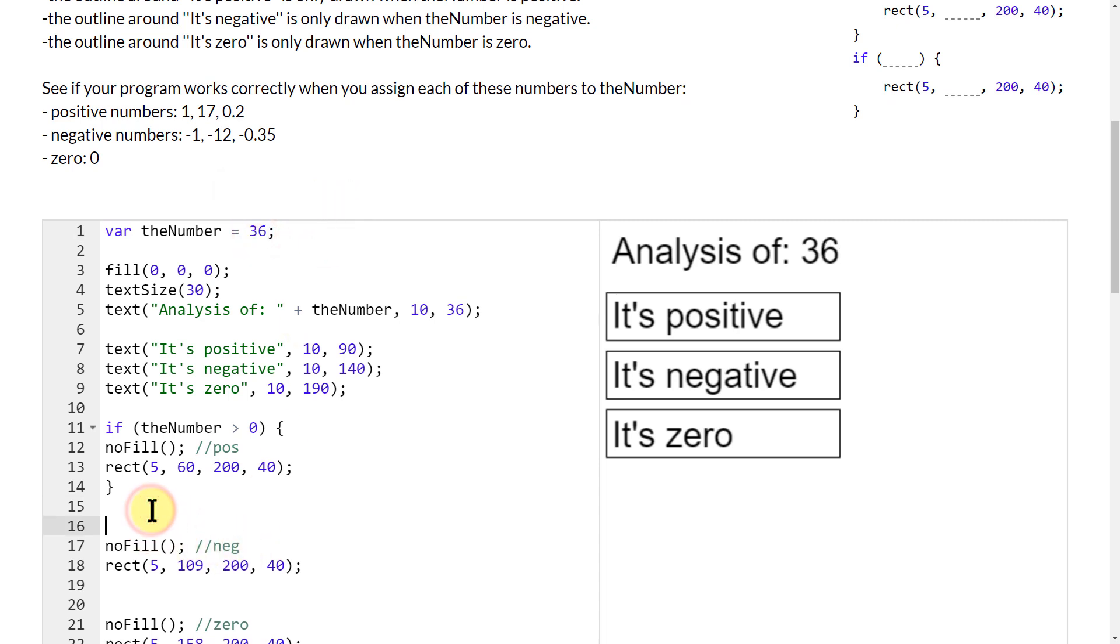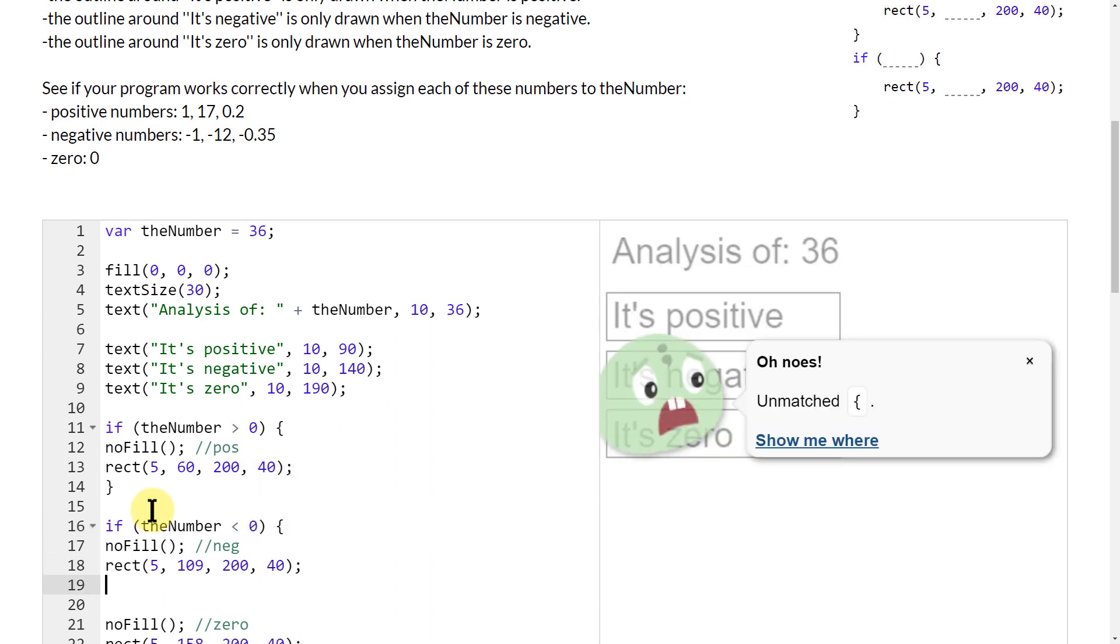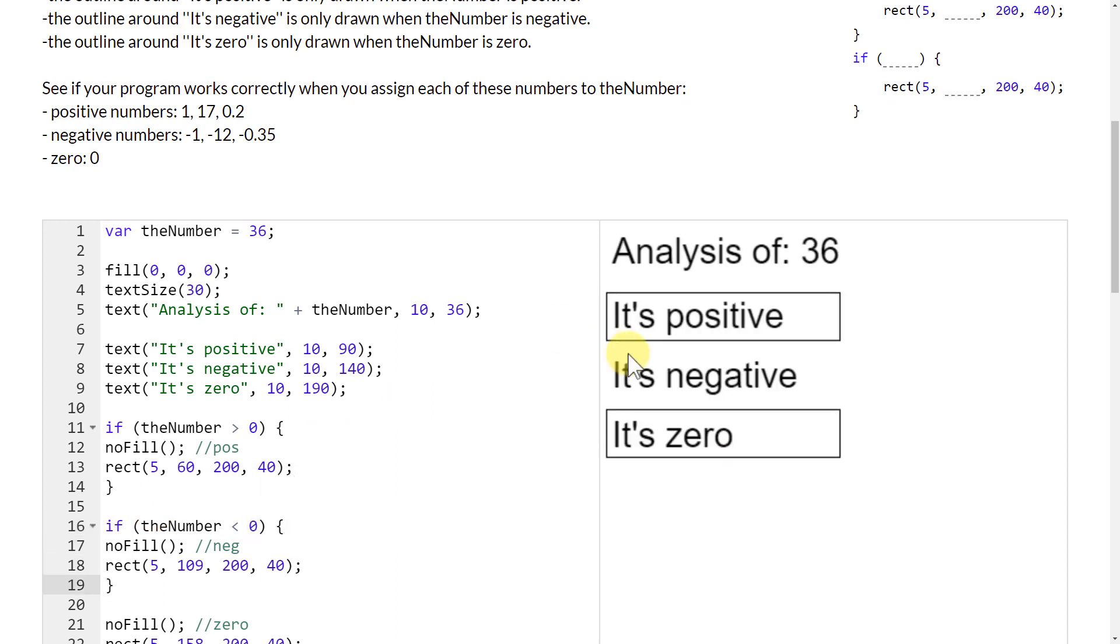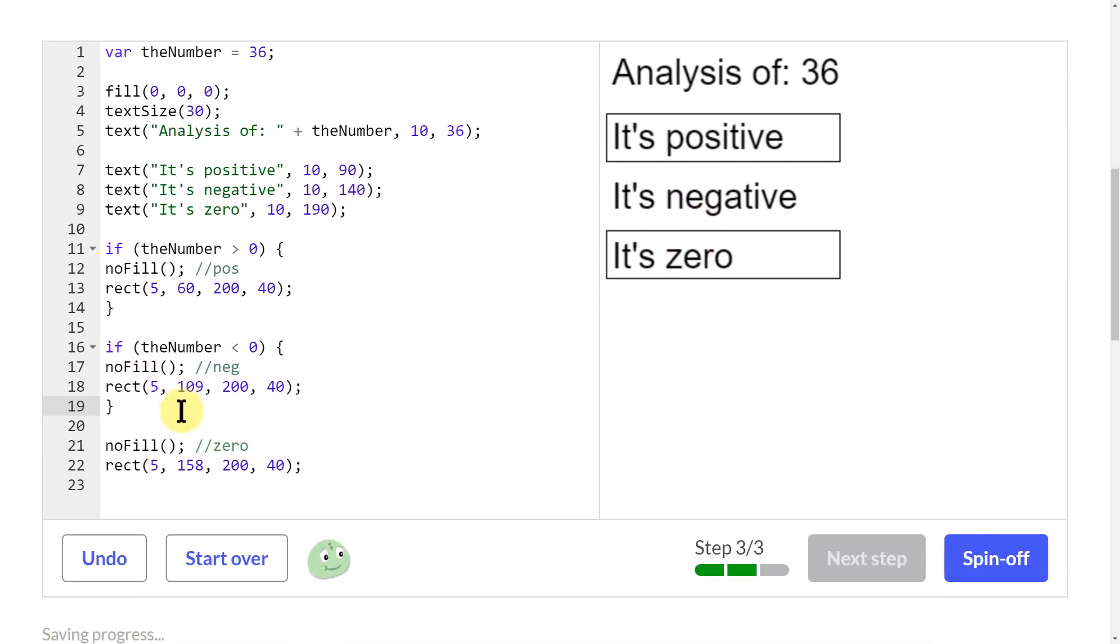I just need to do the same thing on the next two. If the number, in this case negative, so less than zero in curly brackets. So now it went away because the number is not—the number is 36. That's not a negative number, so the rectangle is not here.